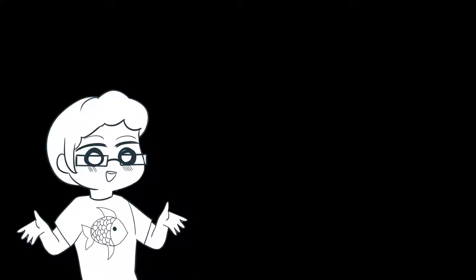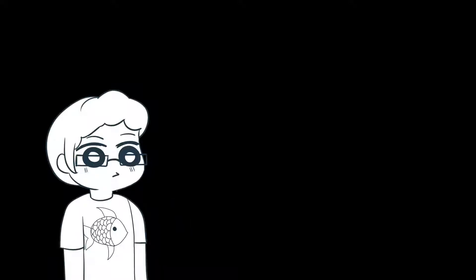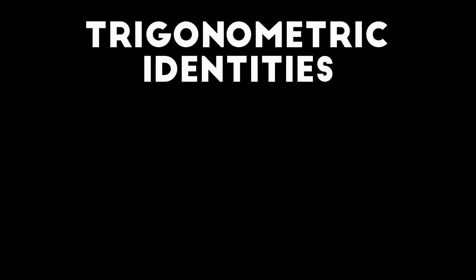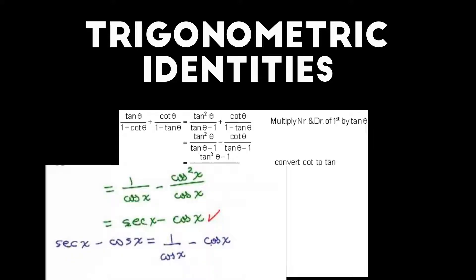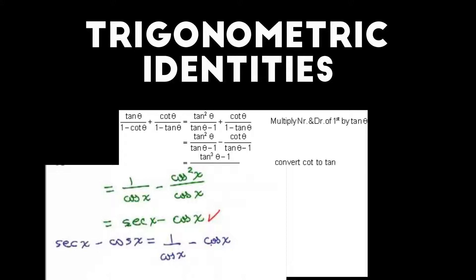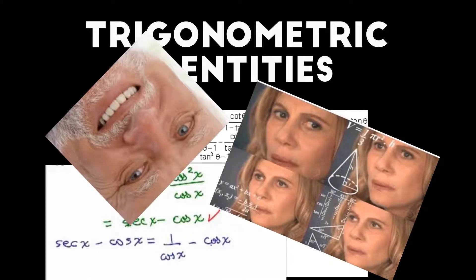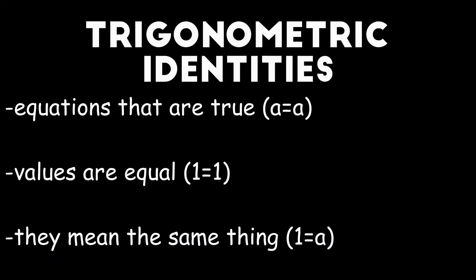To understand how to prove trigonometric identities, we must know what are trigonometric identities. Trigonometric identities in mathematics are equalities that involve trigonometric functions and are true for every value of the occurring variables for which both sides of the equality are defined. In simpler terms, it means both sides of the equations are true because they are equal.